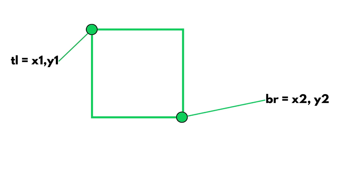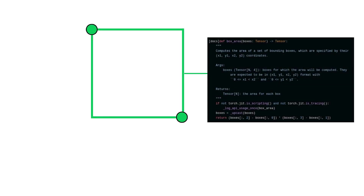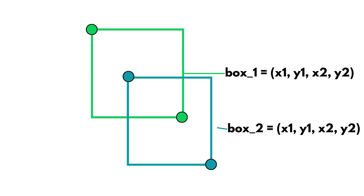To define a bounding box, we need only two coordinate points, since we are dealing only with rectangles: top left and bottom right, which for the purpose of this tutorial we will name respectively x1, y1, and x2, y2. Therefore, a bounding box is written as a tuple of four quantities: x1, y1, x2, y2. We'll see that nomenclature in the code, so keep that in mind to not get confused. We have the same definition for the prediction box, which has its own set of x1, y1, x2, y2.